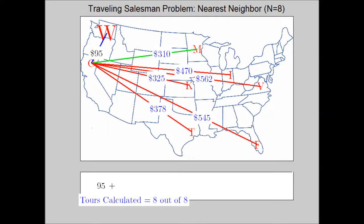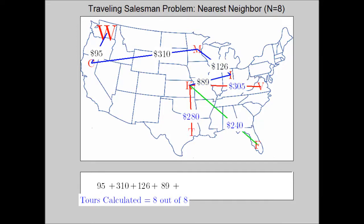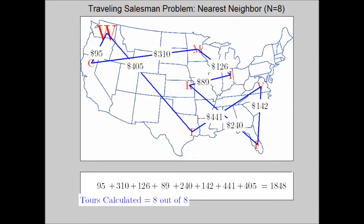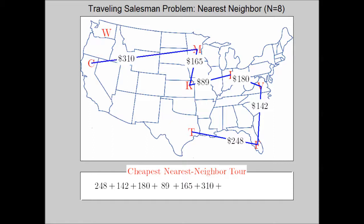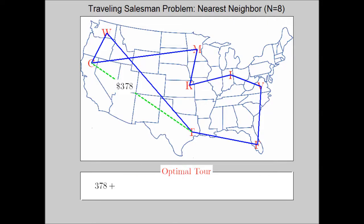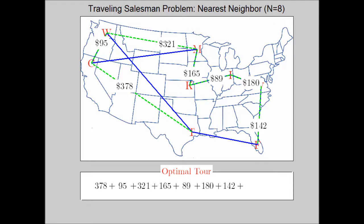It is not as accurate as the brute force algorithm because we cannot guarantee that we will find the optimal tour. We did find the optimal tour for the case of five cities, but for eight cities the nearest neighbor gives a good and efficient answer — we only had to do eight tours. However, it is not the optimal tour. The optimal tour is shown here in green and is slightly cheaper. So the nearest neighbor algorithm is efficient but not perfectly accurate.